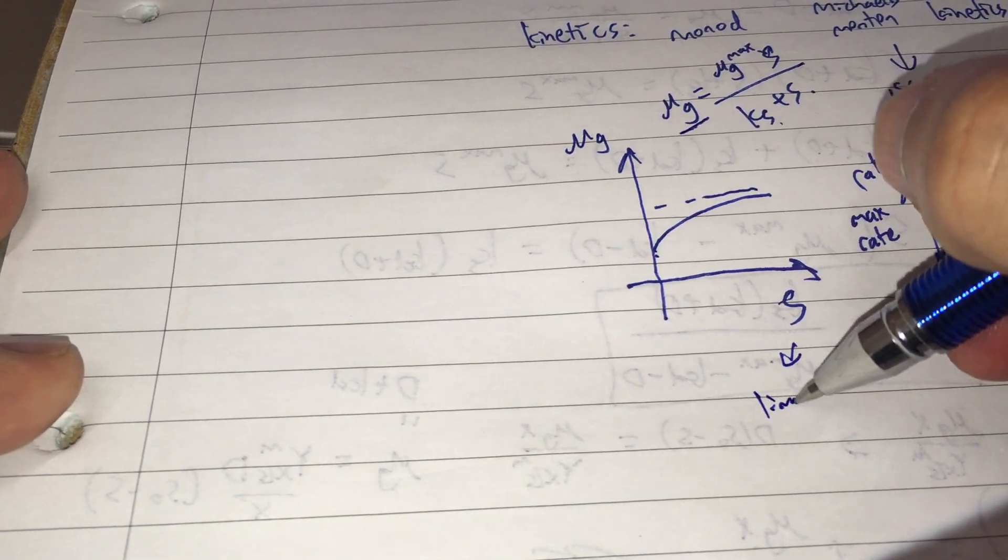This K S and mu G max don't have the solid theoretical background that Michaelis-Menten has. But if you can experimentally derive them, you can develop a correlation to find mu G at any substrate concentration S. This substrate concentration is a limiting substrate.